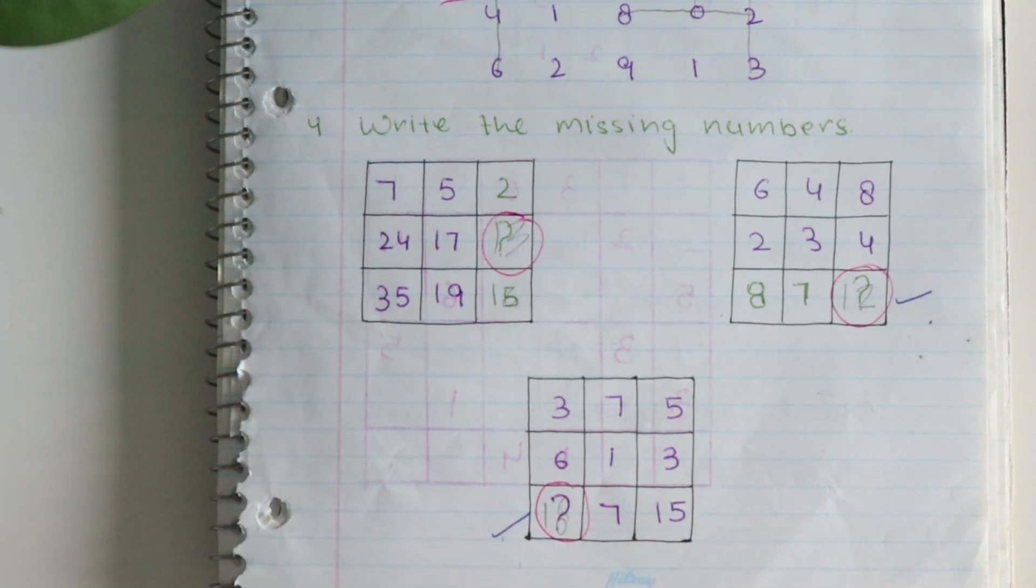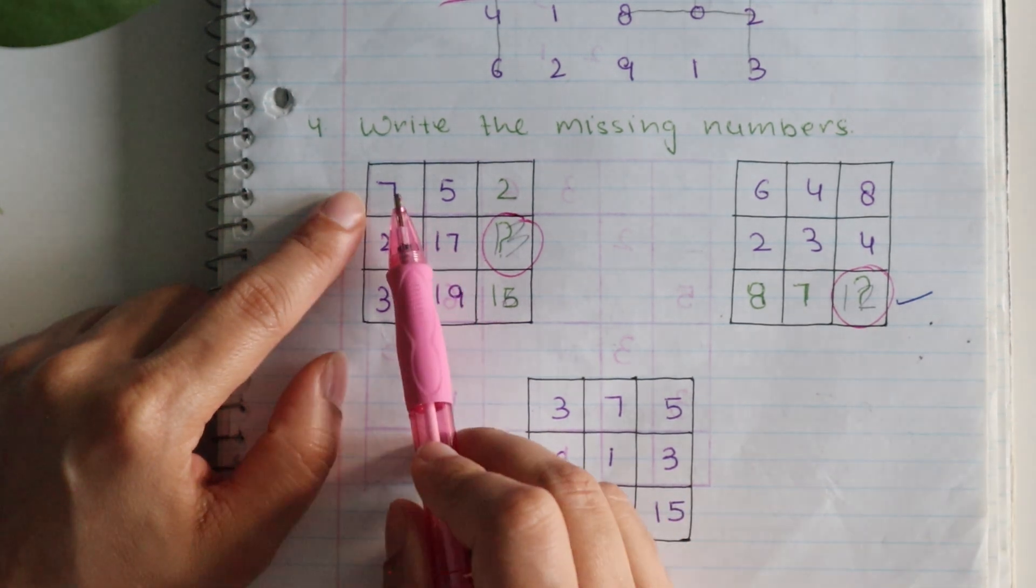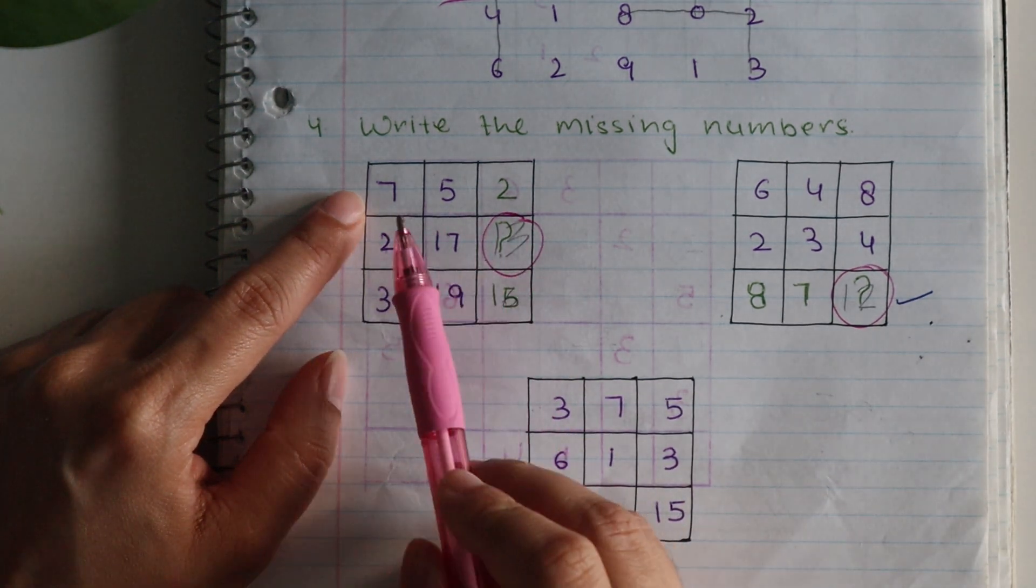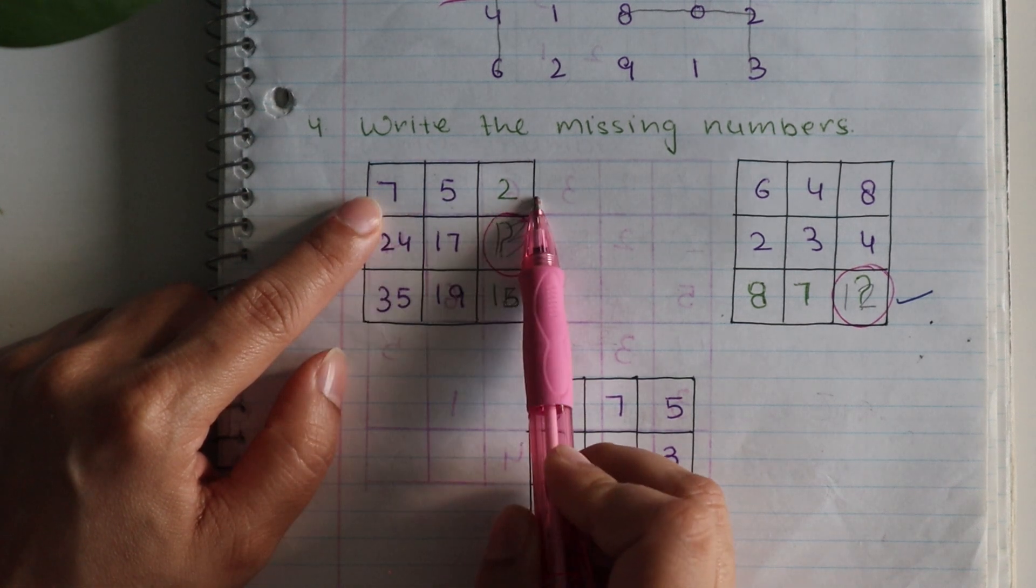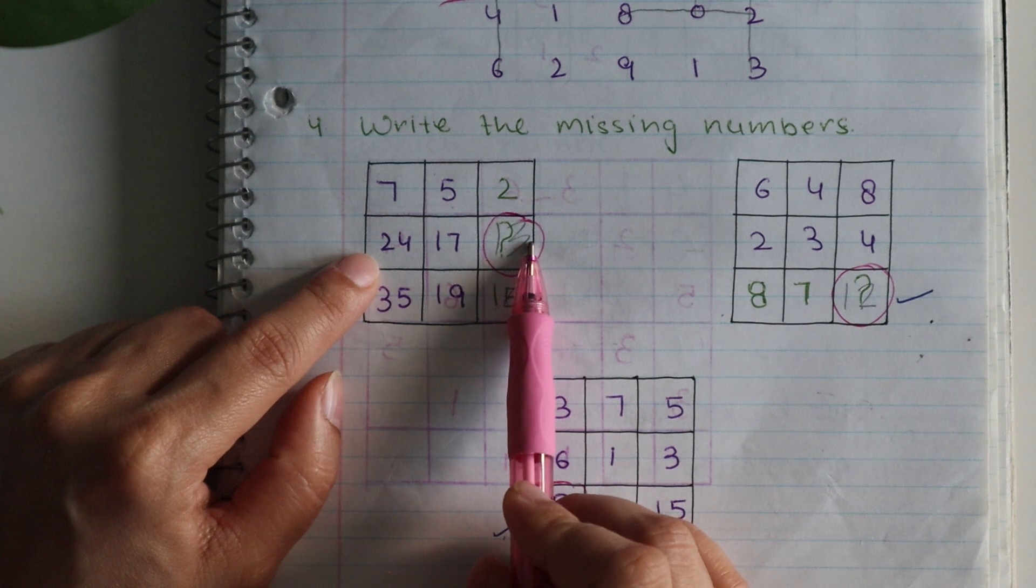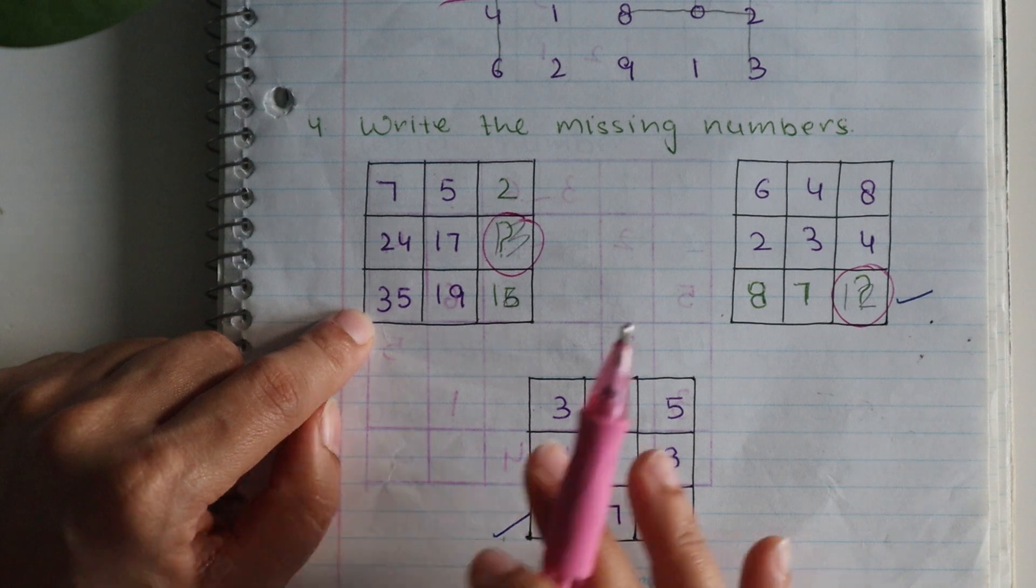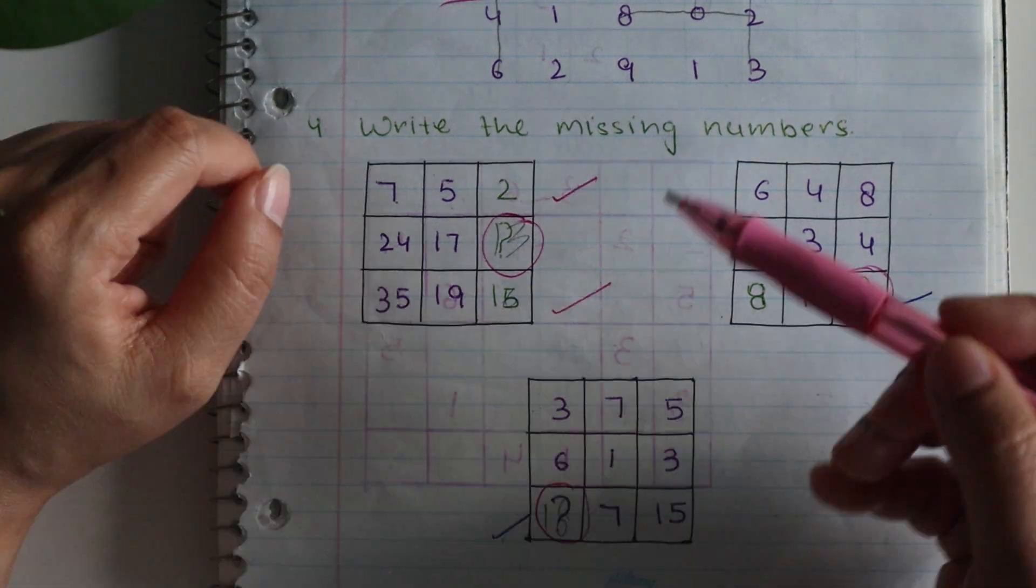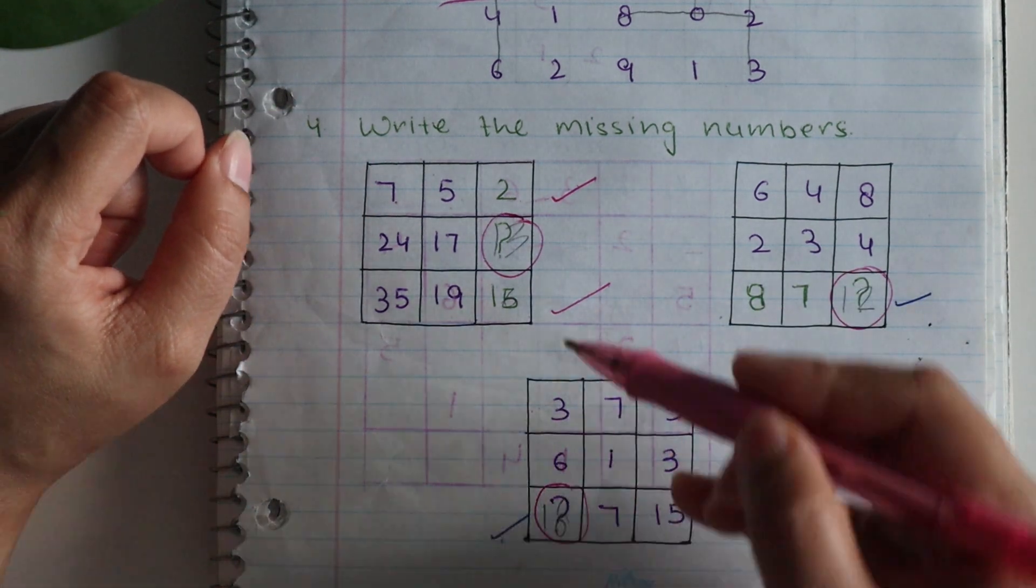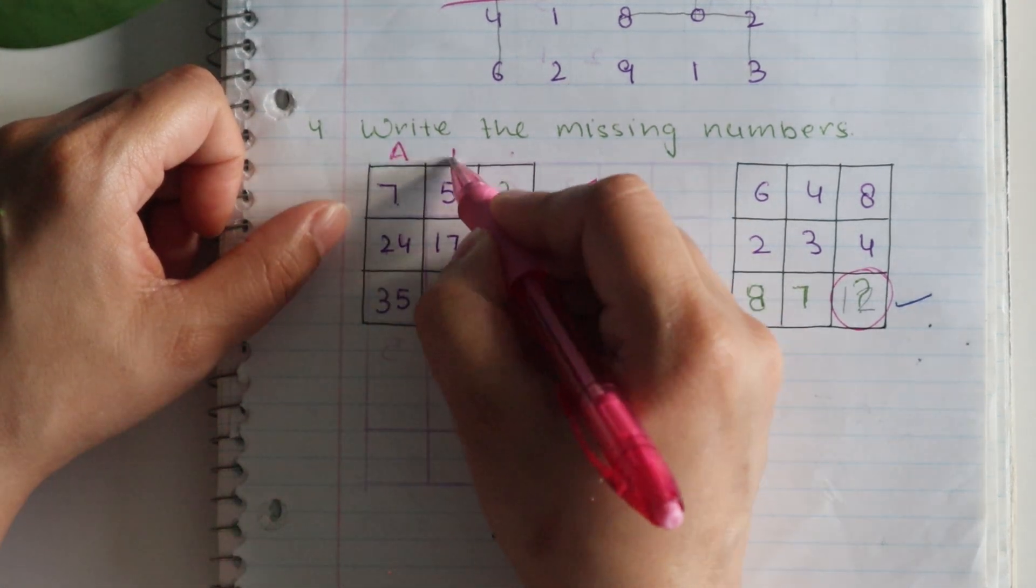Now how to solve this? If you take this first example, the child will have to look at the pattern, which pattern it follows, then he will find the missing numbers here. In this case we have, if you take this row, seven, five, and two. So seven minus five is two. In this row we had to find this number, so if you check this row in which all the numbers are given, thirty-five minus nineteen is sixteen.